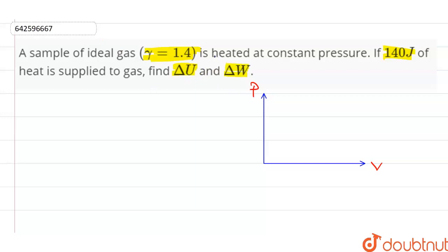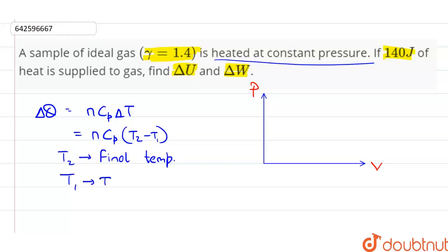The sample gas is heated at constant pressure. This means that delta Q, the heat added, is equal to N Cp delta T. This is equal to N Cp times T2 minus T1, where T2 is the final temperature and T1 is the initial temperature.